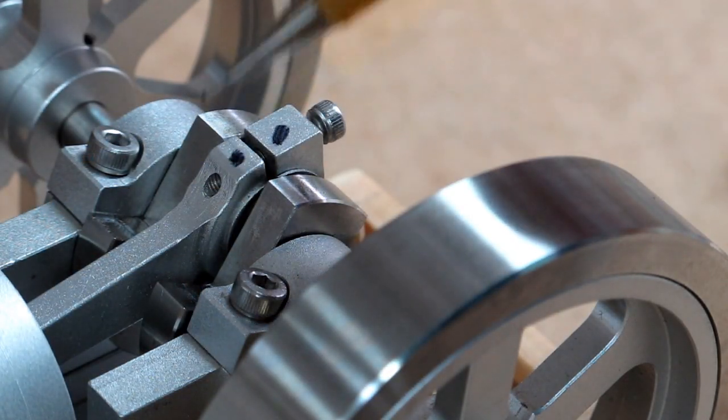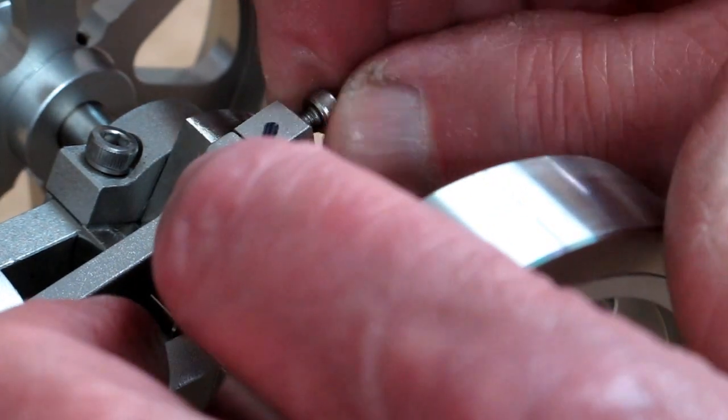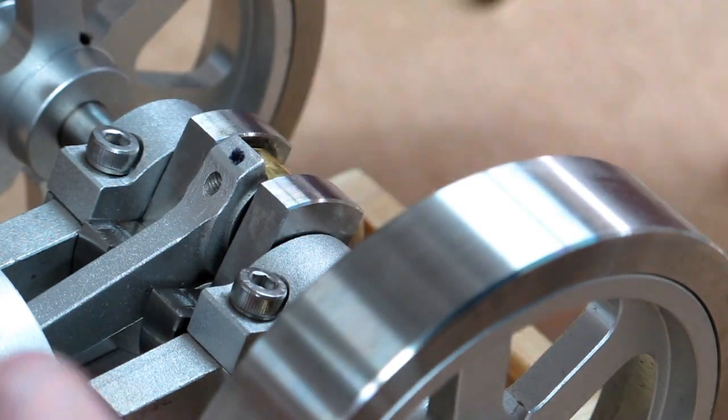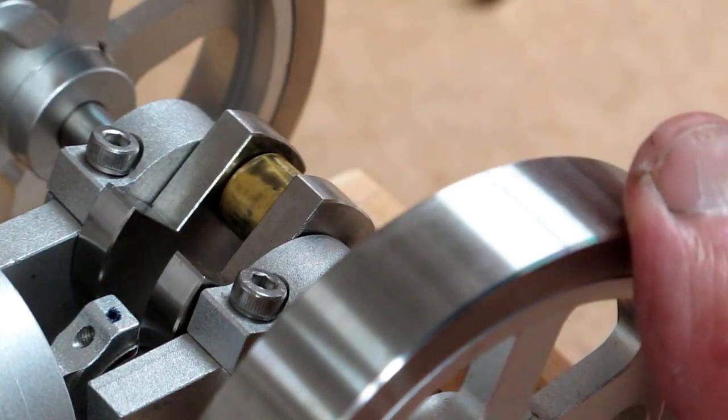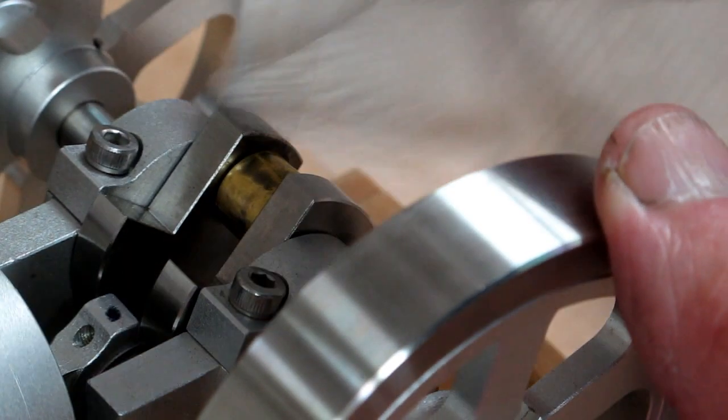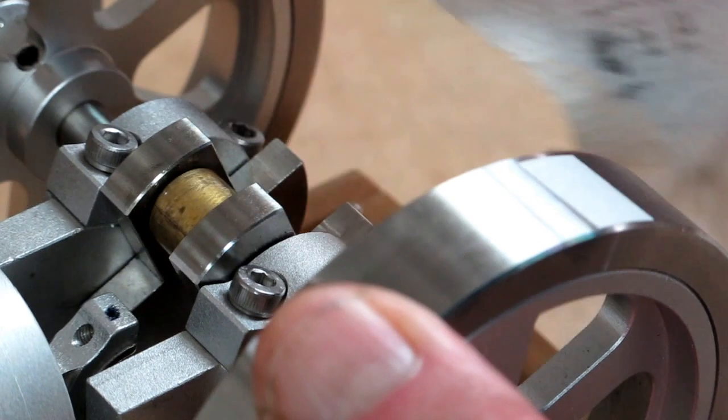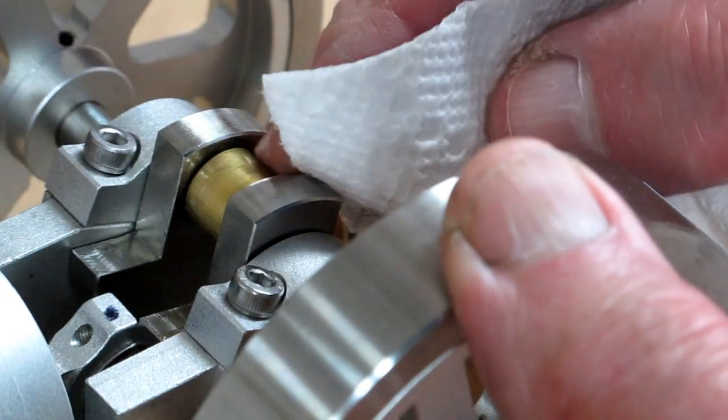I'm going to take the bottom end of the con rod off. I'll put a couple of dots on there with a magic marker so I know that it goes back together the same way it came apart. Push that con rod forward and we can see that's running on a brass bushing. So that is something you want to dribble a little oil down into every time you oil stuff.